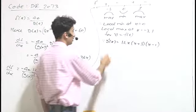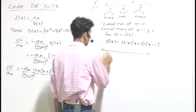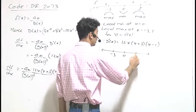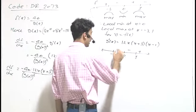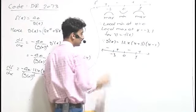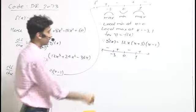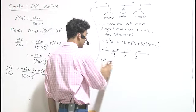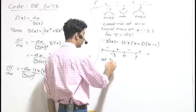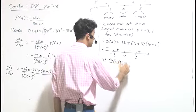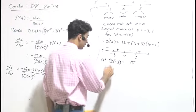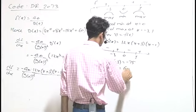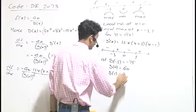This is g'(x). For g'(x), we have stationary points again at x = -3, 0, and 1, with the sign scheme for g'(x) shown accordingly. At x = -3, the value g(-3) = -75; at x = 0, g(0) = 60; and at x = 1, g(1) = 53.